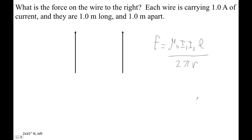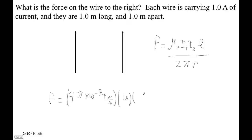Okay, so let's figure it out. Each one's 1 amp. The force is 4 pi times 10 to the minus 7 — that's tesla meters per amp. And then each is 1 amp, so 1 amp times 1 amp. Our length is 1 meter, and they are 1 meter apart, so over 2 pi times 1 meter.